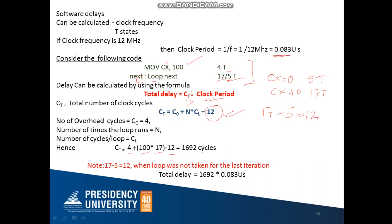So in this video we have calculated the delay knowing the value of the count, which was already given to us. It may also happen that the value of N is not given to you, and you are asked to generate a specific delay — for example, 1 millisecond, 2 milliseconds, or 3 milliseconds. In our coming video, we will see how to generate a specific delay by writing the code. Thanks for watching.